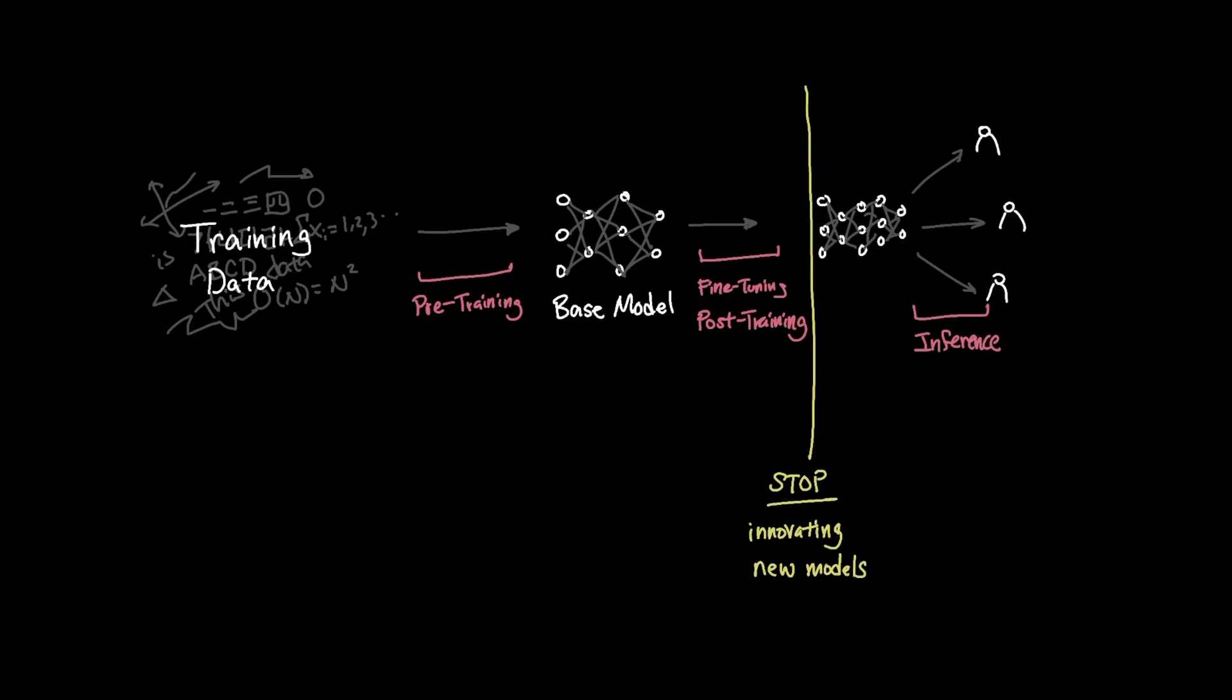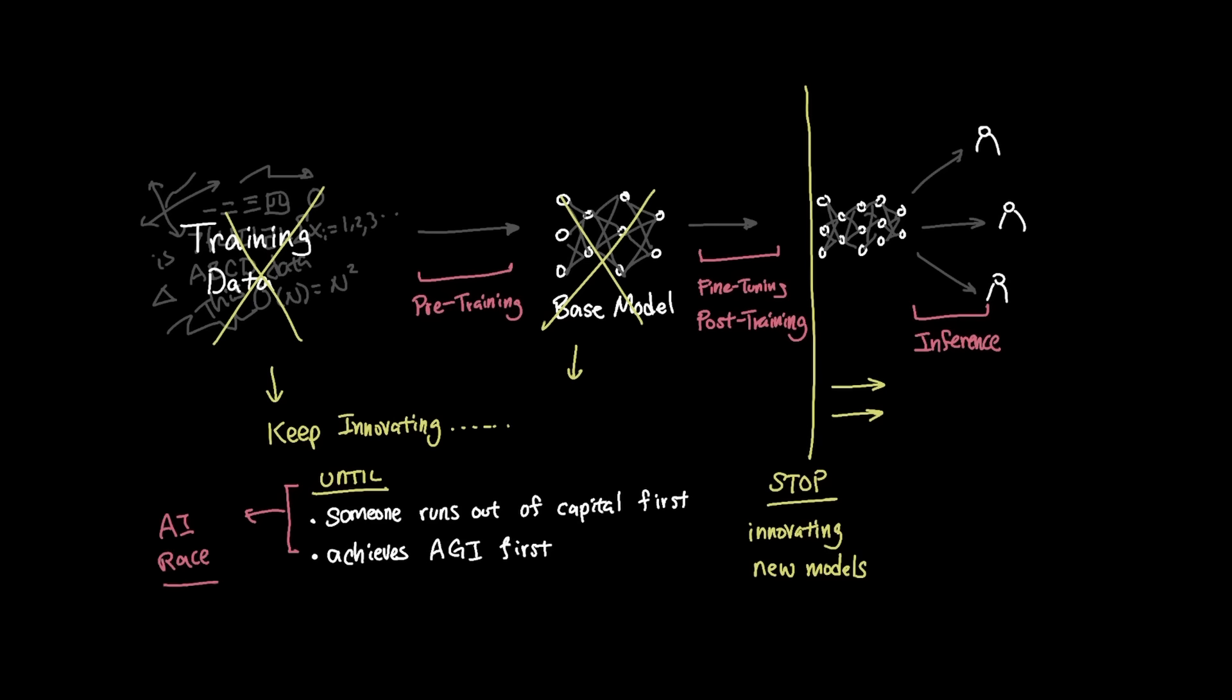So even though frontier labs can just stop innovating newer models entirely and make money off of what they already innovated, the reality is that no frontier labs in their right mind will ever put their tools down because the AI race is all about getting the next best thing until someone either runs out of money first or achieves AGI first. So essentially, the AI race is starting to look more like the game of chicken where you either run out of money last or you achieve AGI first.